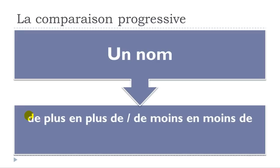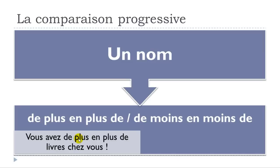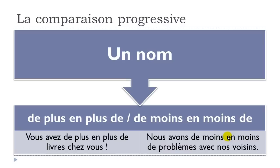With a noun, it's slightly different — you need to add DE after: DE PLUS EN PLUS DE + noun, or DE MOINS EN MOINS DE + noun. For example: VOUS AVEZ DE PLUS EN PLUS DE LIVRES — you have more and more books. NOUS AVONS DE MOINS EN MOINS DE PROBLÈMES AVEC NOS VOISINS — we have fewer and fewer problems with our neighbors. That extra DE is the only difference from adjectives and adverbs.